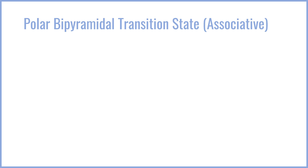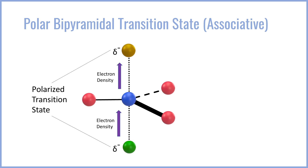Very importantly, this goes through what is known as an associative transition state — meaning the leaving group bond is breaking at the same time that the nucleophile bond is forming. Specifically, it goes through a trigonal bipyramidal transition state, where the other three groups are planar, and the nucleophile and the leaving group form the vertices of the trigonal bipyramid. This transition state is heavily polarized: both the leaving group and the nucleophile carry a partial negative charge, and electron density is being pushed from the nucleophile towards the carbon, and then from the carbon towards the leaving group.